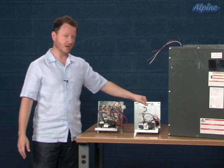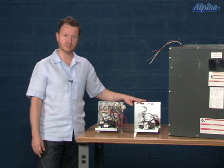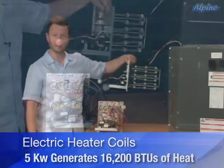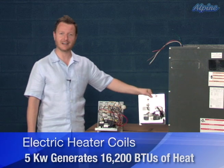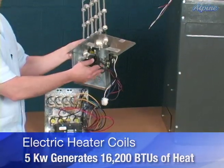Now, electric heater coils come in several different capacities. The larger the capacity, the more heat it provides. On the low end of the spectrum, we have here a 5 kilowatt heater coil and this puts out about 16,000 BTUs of heat and it operates on a single 30 amp electrical circuit.